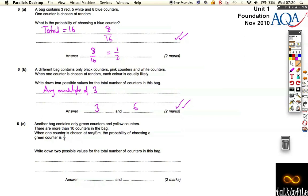Well, there are more than ten counters in the bag. So if the probability is three quarters, let's increase that. I mentioned that was six out of eight.